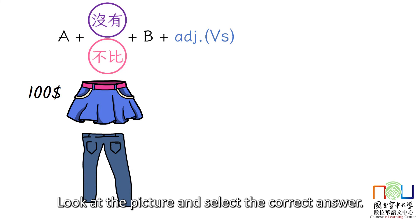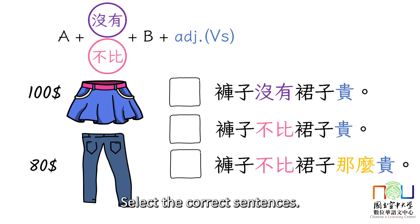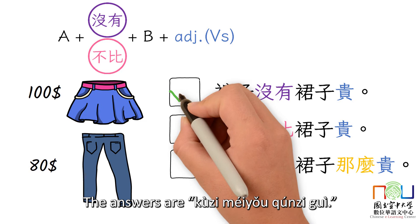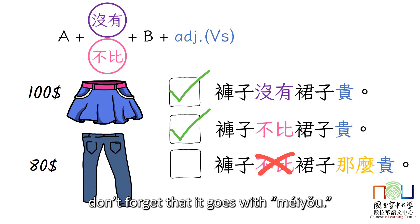Time to practice. Look at the picture and select the correct answer. There may be more than one answer. Look at the shorts, skirt, and their prices. Select the correct sentences. The answers are 裤子没有裙子贵 and 裤子不比裙子贵. If you want to use 那么, don't forget that it goes with 没有.